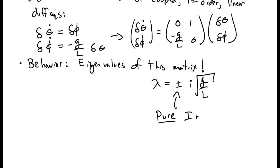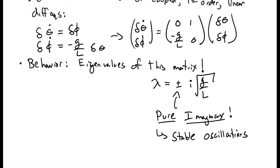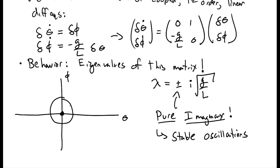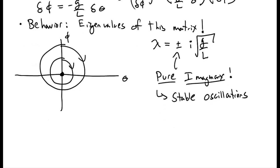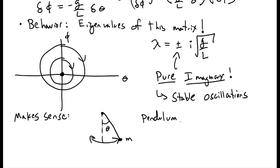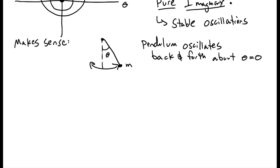Pure imaginary eigenvalues imply stable oscillations. Looking at phase space of phi and theta, our critical point at the center should exhibit stable circles — stable oscillations around it. This makes physical sense: near theta equal to zero, near the bottom of the pendulum, the pendulum just swings back and forth, oscillating around theta equal to zero. That's exactly what the phase space is telling us.